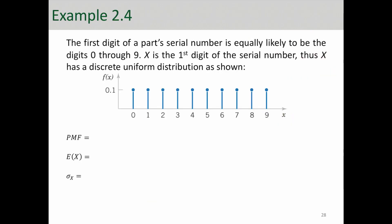Let's look at an example. The first digit of a part's serial number is equally likely to be any digit from 0 through 9. The key piece of information here is 'equally likely' — that's always an indicator that this might be a uniform random variable. X is the first digit of the serial number, so X has a discrete uniform distribution, as shown.